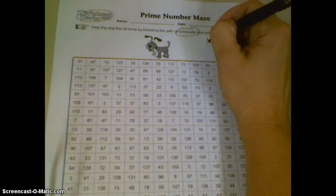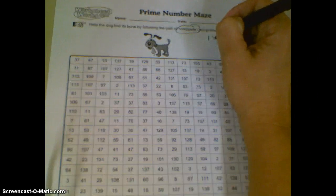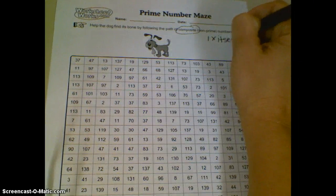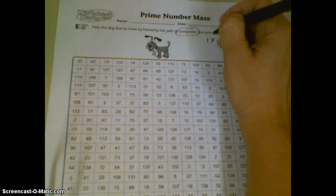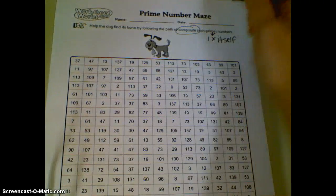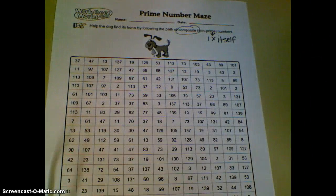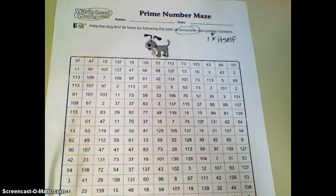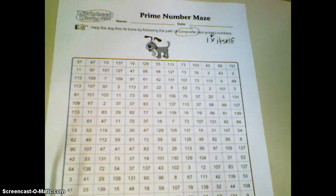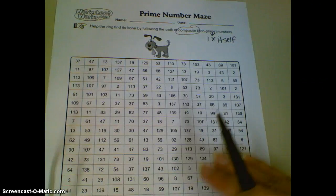Remember, prime are numbers that have only one and itself as a factor. That's what prime numbers are, so there are a lot of composite numbers. This sheet today is actually filled with a ton of prime numbers, and our job is to figure out which ones are not prime.